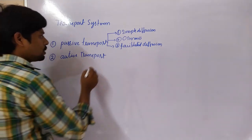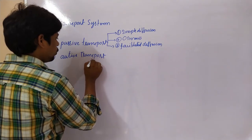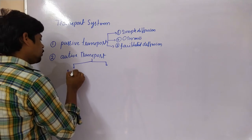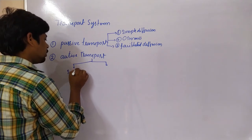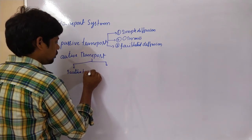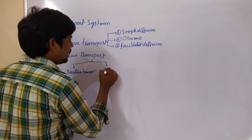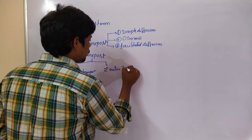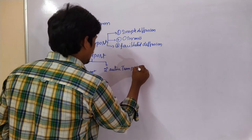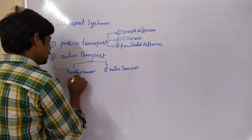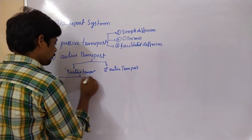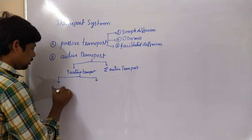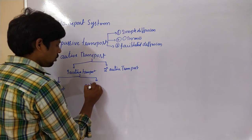Passive transport is divided into simple diffusion, osmosis, and facilitated diffusion. Active transport is divided into two types: primary active transport and secondary active transport. Again, primary active transport is divided into two types — uniport and co-transport.